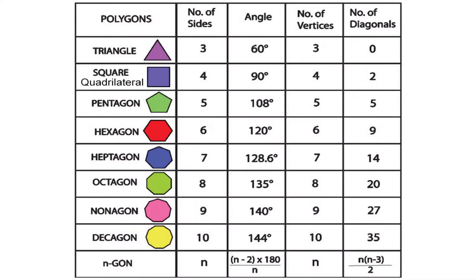Here is the classification of polygons. A three-sided polygon is called a triangle. A four-sided polygon is called a quadrilateral. Five-sided pentagon, six-sided hexagon, seven-sided heptagon, eight-sided octagon, nine-sided nonagon, and ten-sided decagon, and so on.